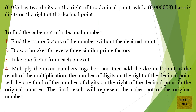0.02 has two digits on the right of the decimal point, while 0.0000008 has six digits on the right of the decimal point.